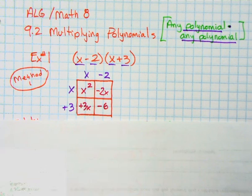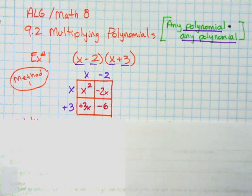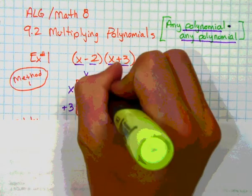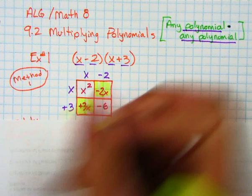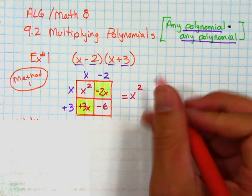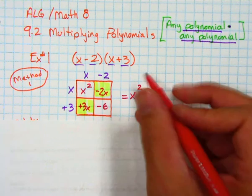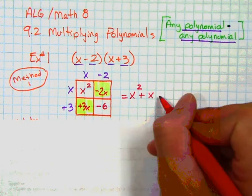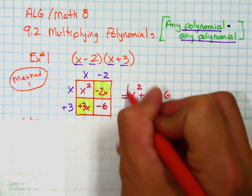What's really great about this particular way of doing things is you're going to notice that many times these diagonals here are going to be like terms. So that's great. Those are the ones that I can combine. So I start with the largest exponent. That's this guy here. So x squared. Next, 3x, negative 2x, x gives me positive 1x. And last but not least, I'm left with my constant, negative 6. So there's my answer there.